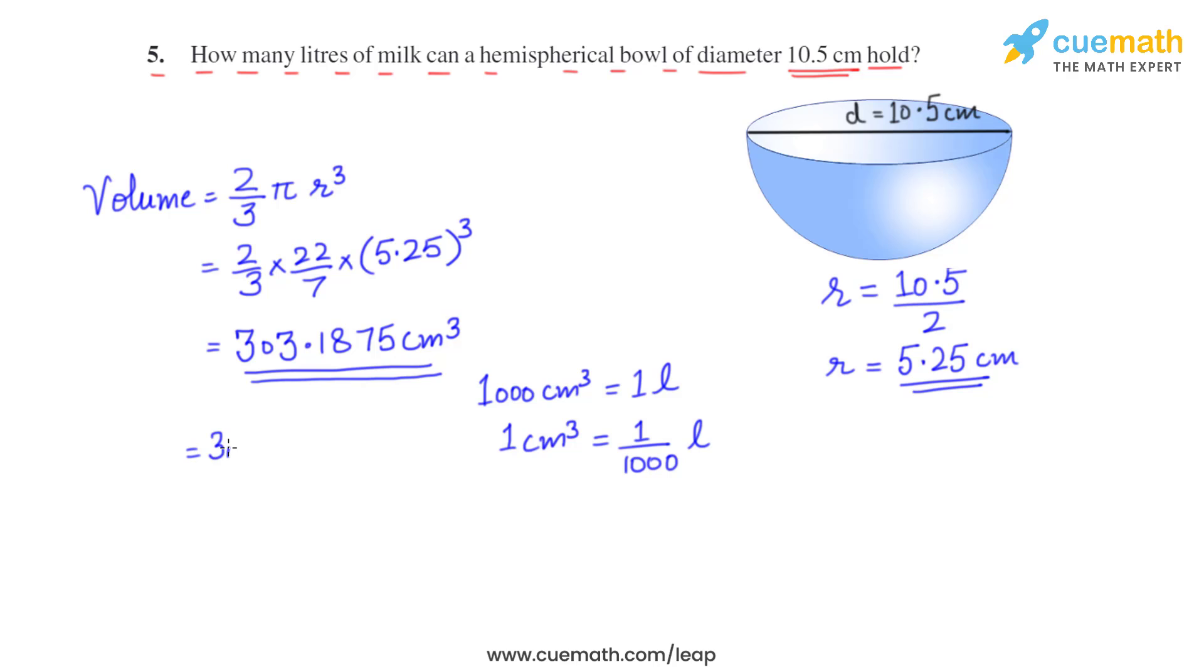That is 303.1875 multiplied by 1 by 1000 liters, so it comes out to be 0.3031875, or we can round it off to three decimal places, that is 0.303 liters. So the hemispherical bowl can hold 0.303 liters of milk.